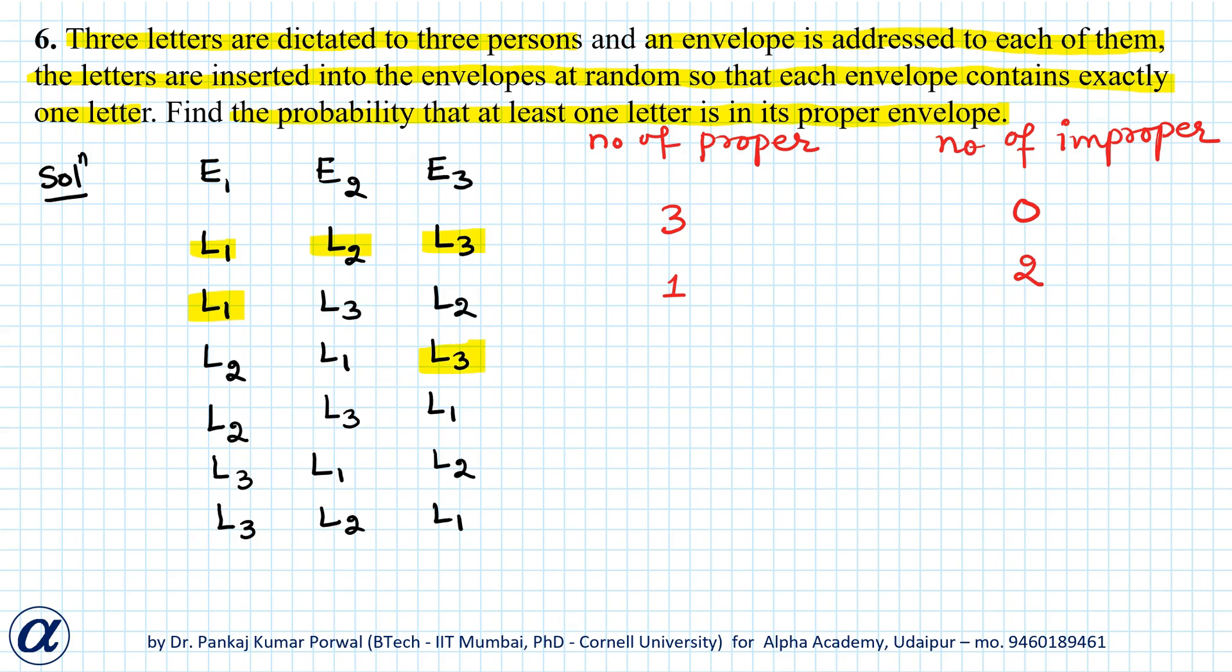In the third case, only L3 is improper, so 1 proper and 2 improper. Case four: all 3 improper, so 0, 3. Case five: all 3 improper, so 0, 3. And case six: only L2 in proper, so 1, 2.